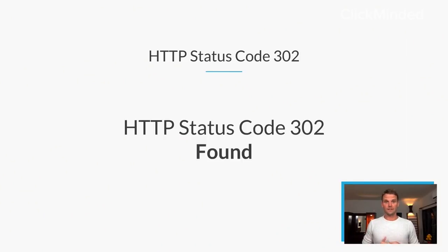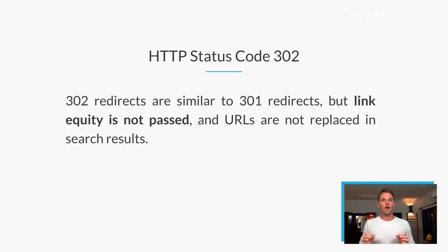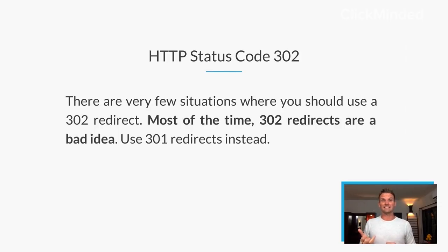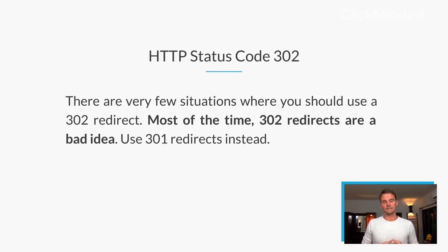Now let's talk about the 302 redirect — the Response Found. 302 redirects, in general, are bad. You usually don't want to be implementing them. They're similar to 301s in behavior, however link equity is not passed. These are usually used for temporary situations, and URLs are also not replaced in search results. There are very few situations where you would use this. You almost always want to be using 301 redirects instead. 302 redirects are used for very temporary situations, like maybe collecting data or A-B tests.